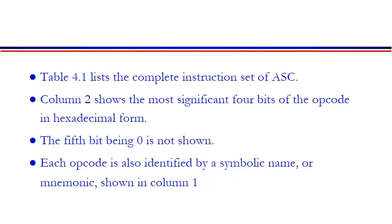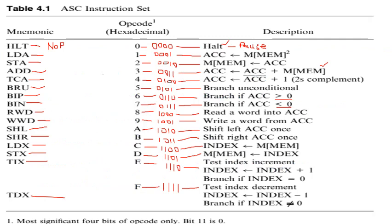The fifth bit, which is zero, will not be used. Each opcode is identified by a symbolic name also termed as a mnemonic, shown in column number one. This is the detailed instruction set of the simple computer. As mentioned in previous lectures, we are using a 16-bit computer system, so our instruction format and data format will also be 16 bits in length.